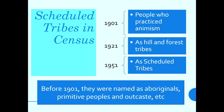Several tribes have been mentioned differently in different censuses. In the 1901 census, tribes were defined as people who practiced animism. In the 1921 census, tribes were defined as people living in hill and forest areas. In the 1951 census, these people were classified as scheduled tribes, and from that point onwards the nomenclature mentioned in the Constitution is called Scheduled Tribes.